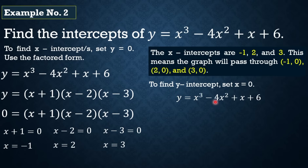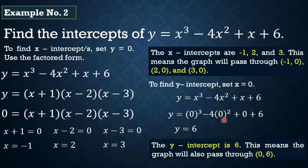To find the y-intercept, set x = 0. Papalitan lang natin ng 0 yung variable x, and the answer is 6. So the y-intercept is 6. This means that the graph will also pass through (0, 6).